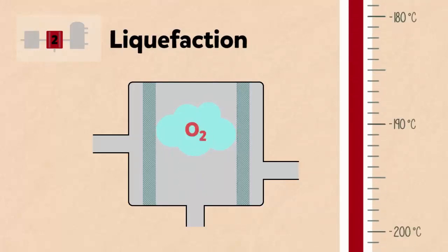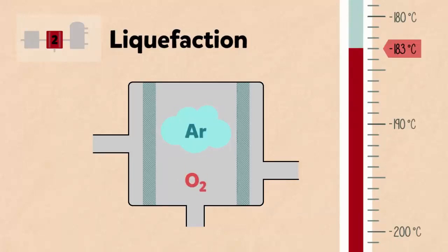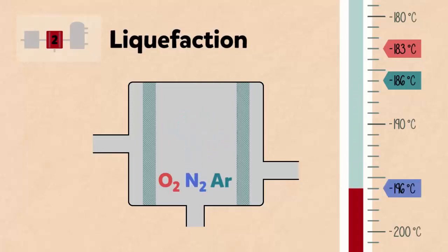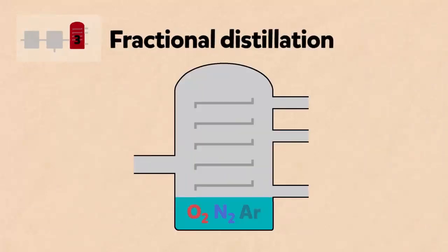The oxygen liquefies at minus 183 degrees Celsius, argon at minus 186 degrees Celsius, and nitrogen liquefies at minus 196 degrees Celsius. The liquid nitrogen, argon and oxygen are then separated by fractional distillation.